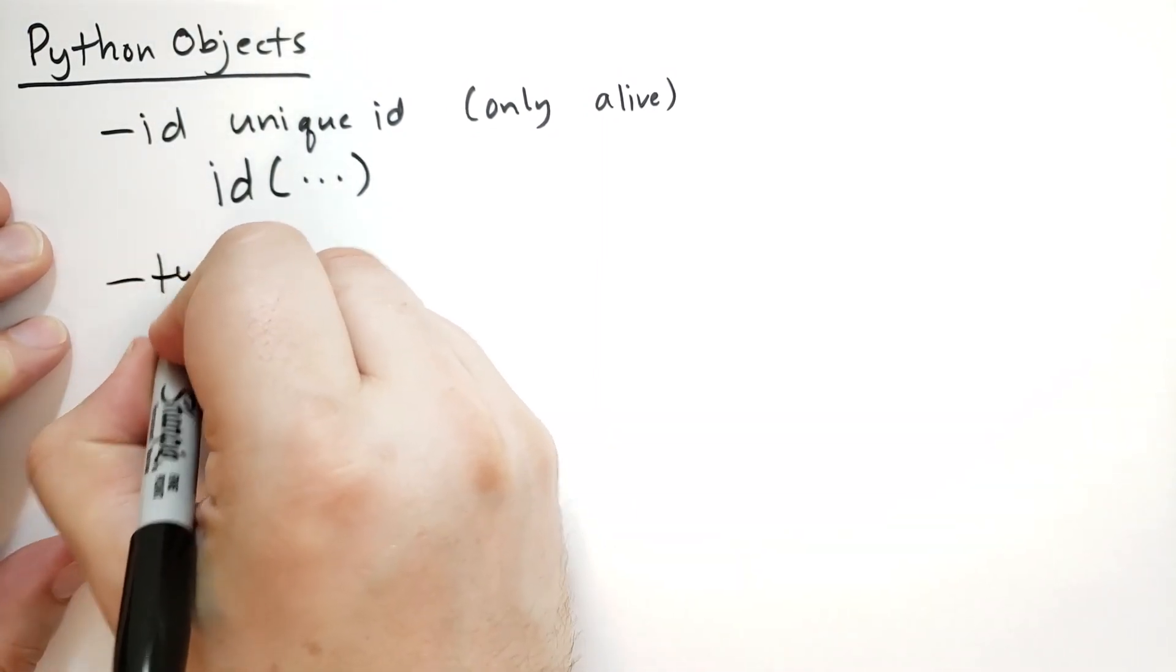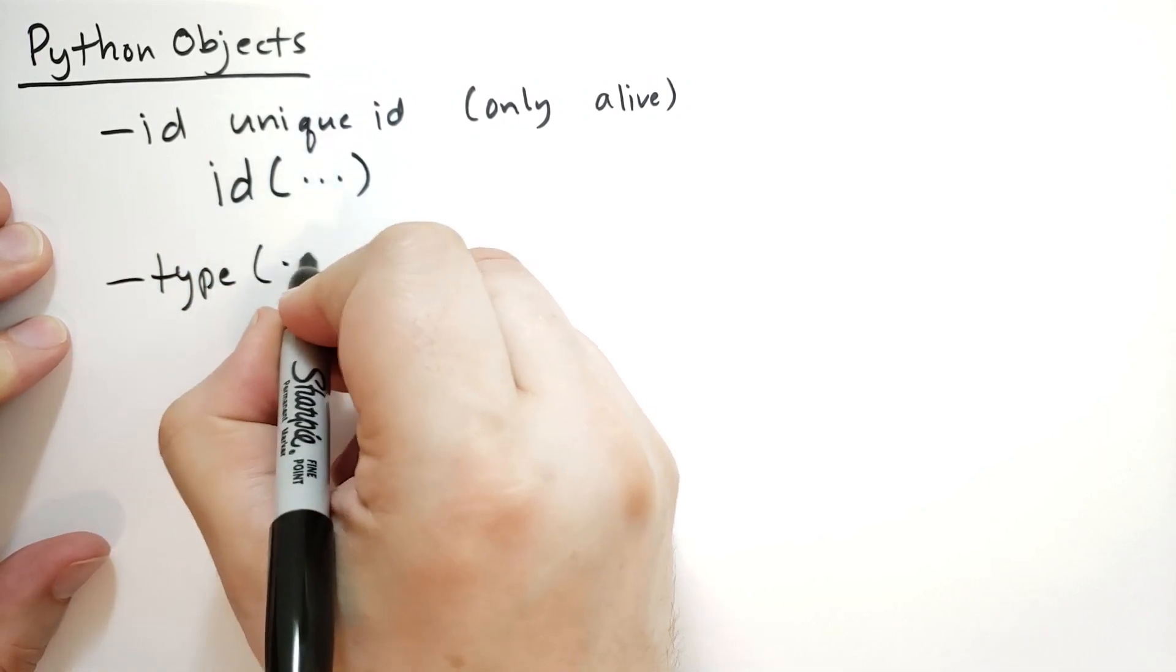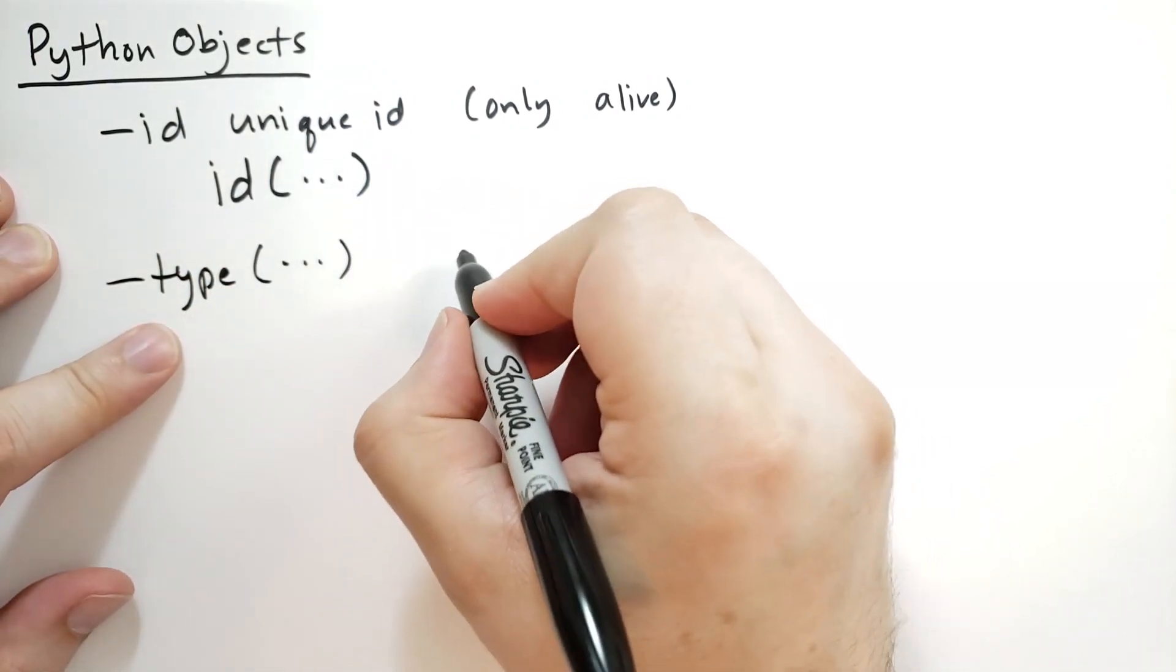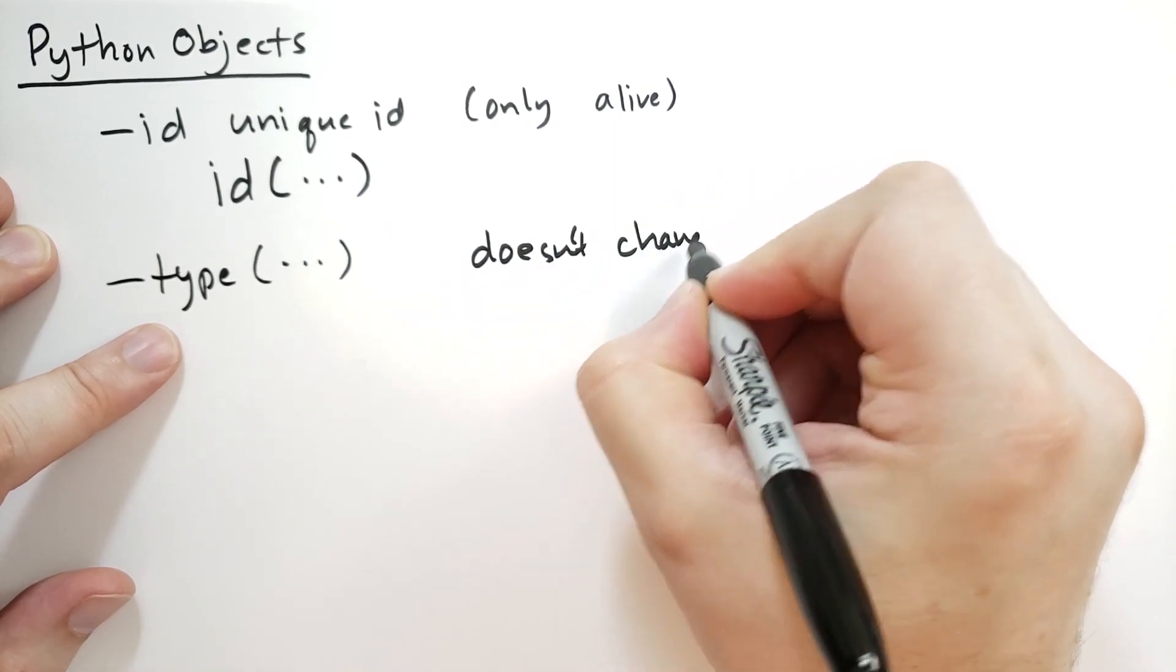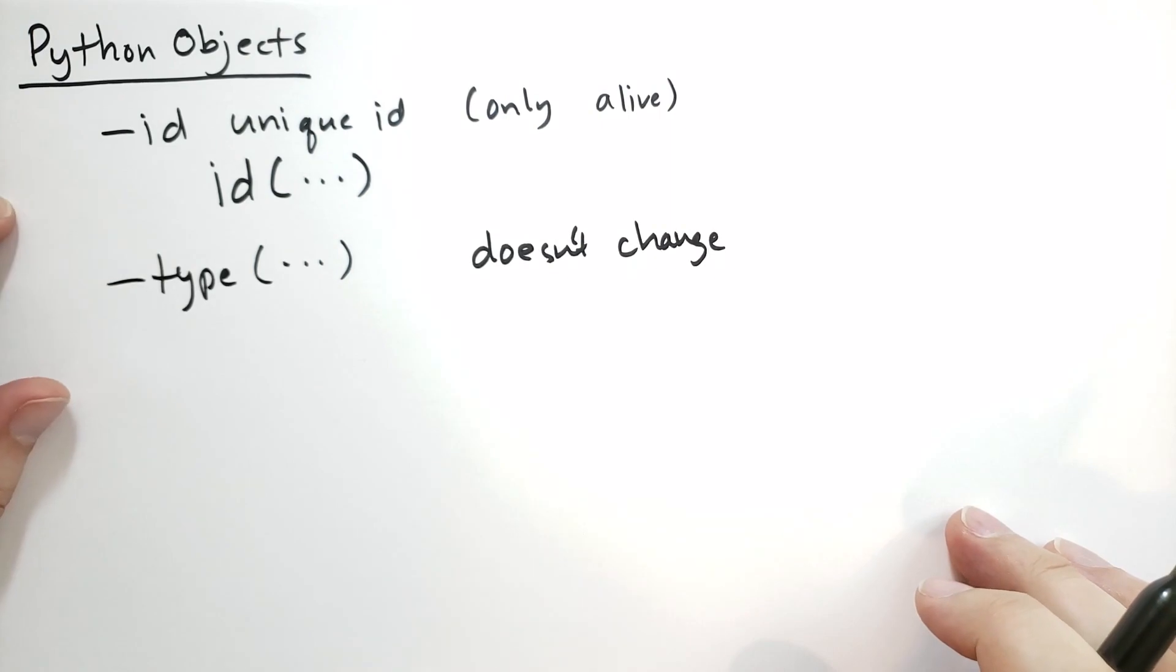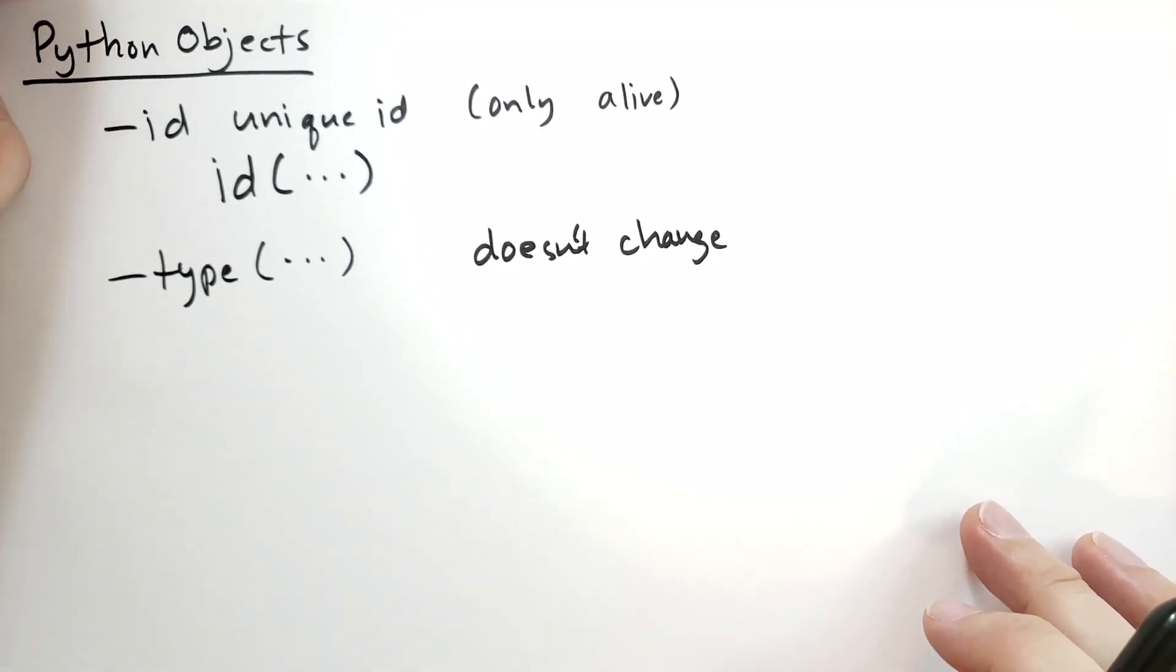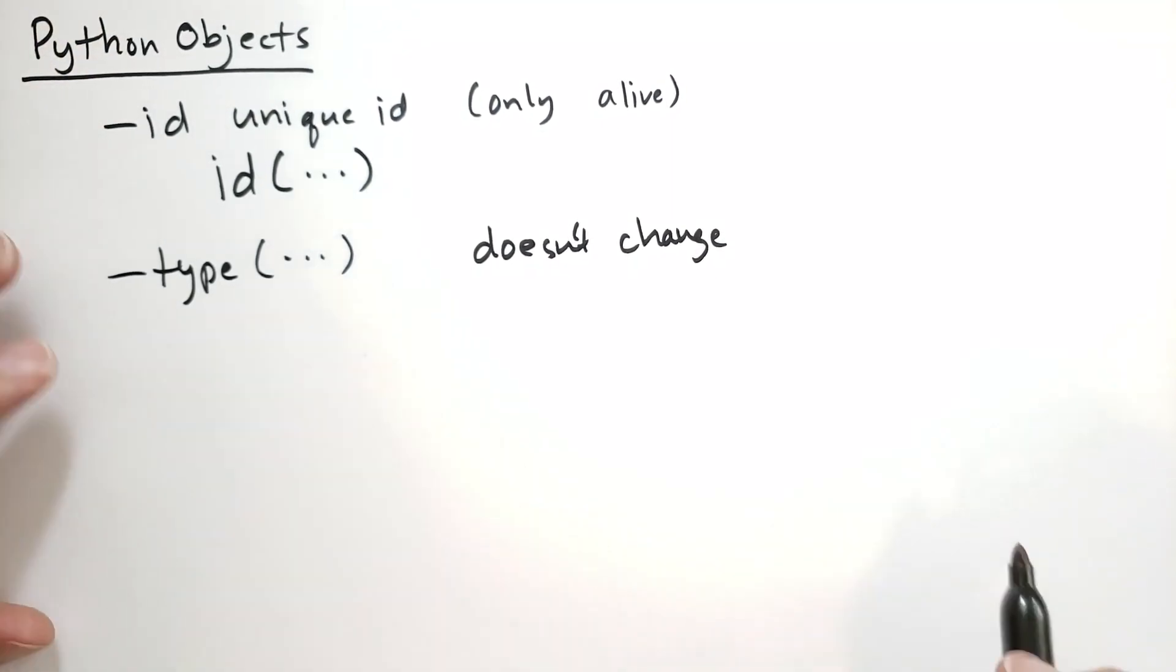The other thing you can do with objects is you can see the type of the object using the type function. Every object has a type and the type doesn't change throughout the object's life. So you can't like convert an integer into a float. Integers and floats themselves are immutable. They never change.